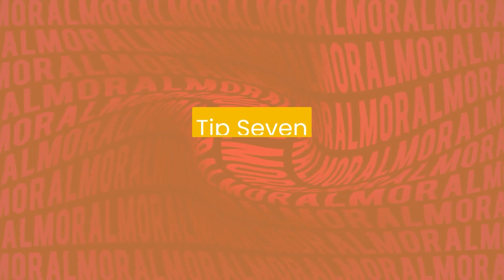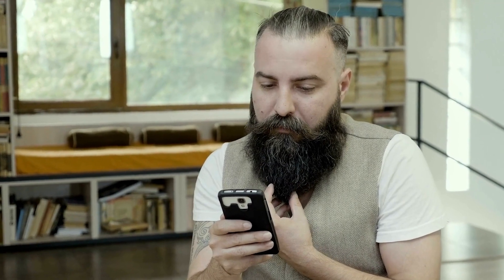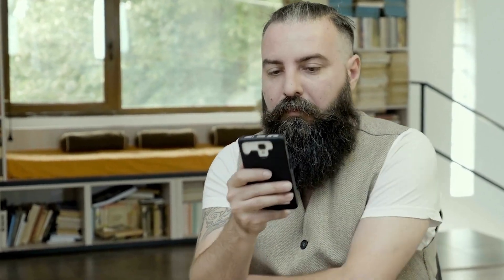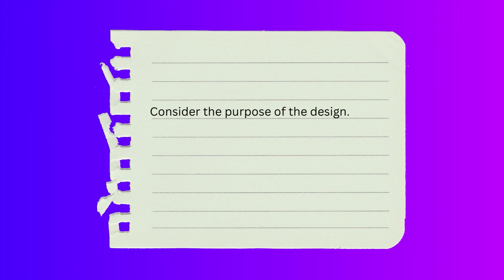Tip number seven is good use of typography. Typography has to do with how you work with text inside of Canva, and it's the crucial rule on how to convey any message in your design to a viewer. Make sure that any text you use is conveying the message clearly and enhancing the aesthetic of your design. Consider the purpose of your design and the audience you are targeting.